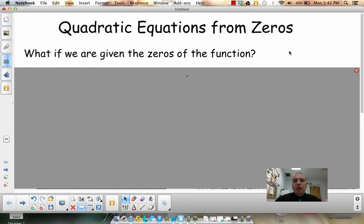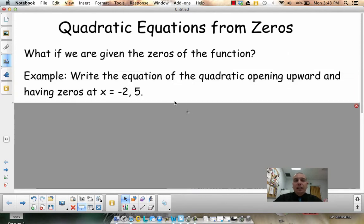Quadratic equations if I'm given the zeros. In other words, what if I know where it crosses the x-axis in advance? So the example that you have on your MCA: write the equation of the quadratic. Now, I'm going to say opening upward because if it opened downward, it would be a different type of equation, different looking equation.